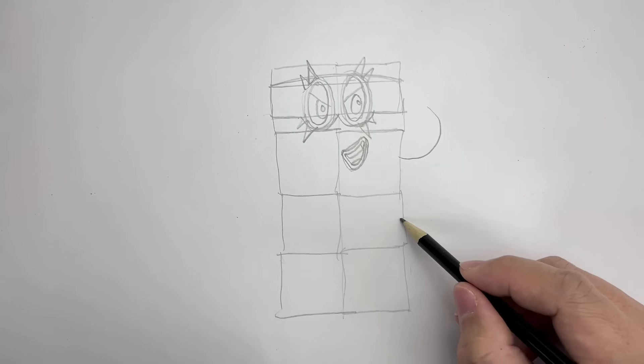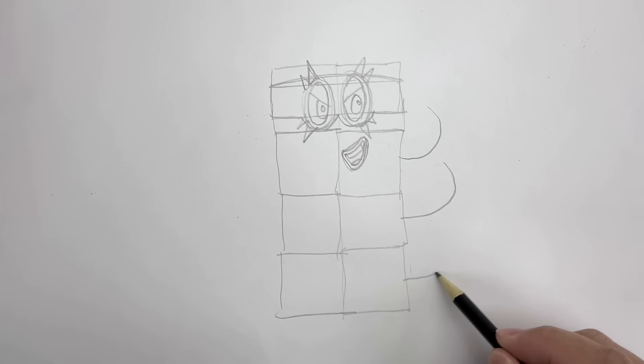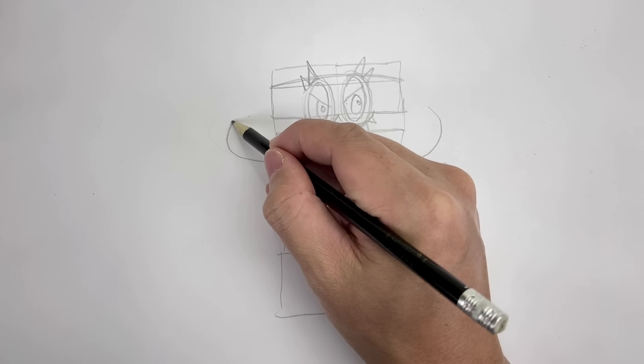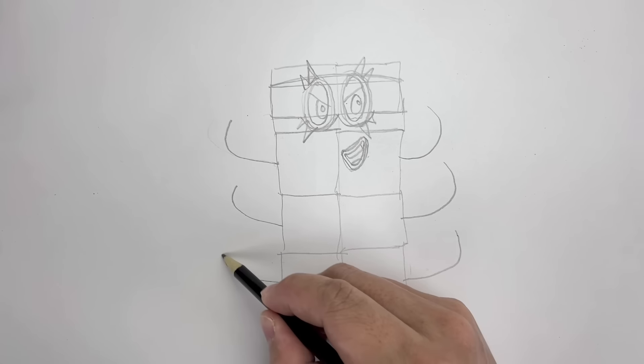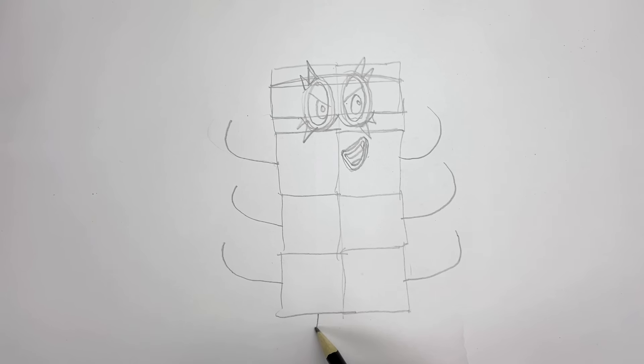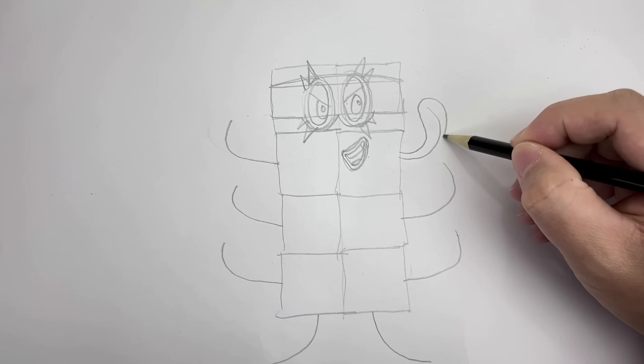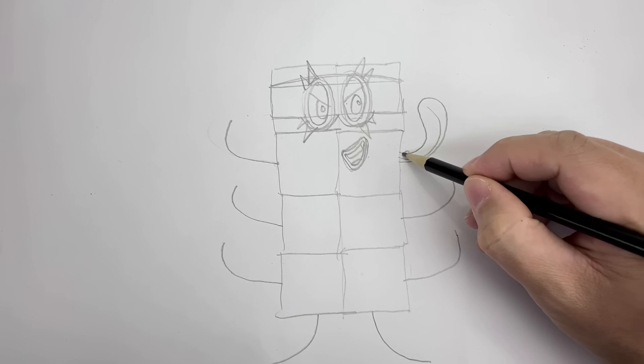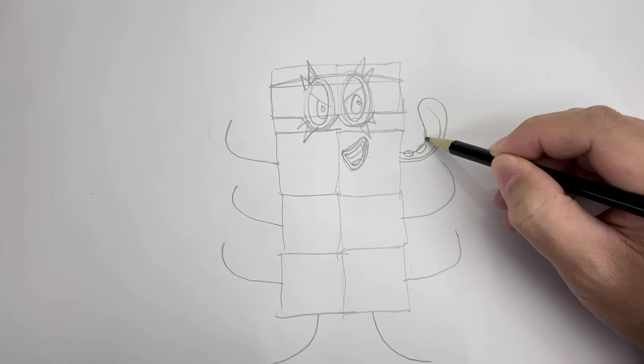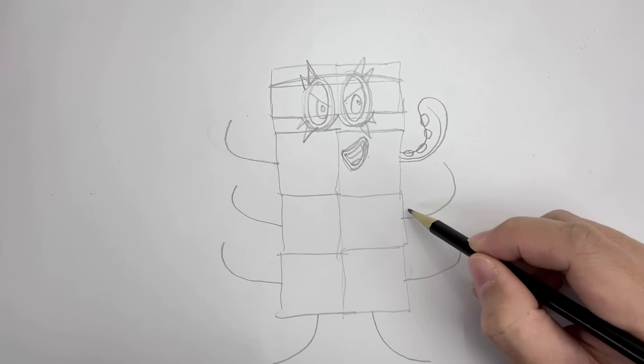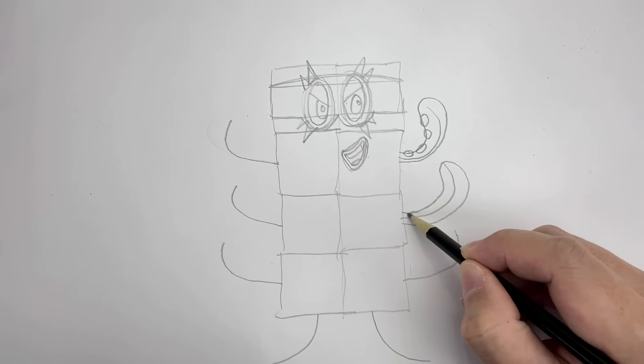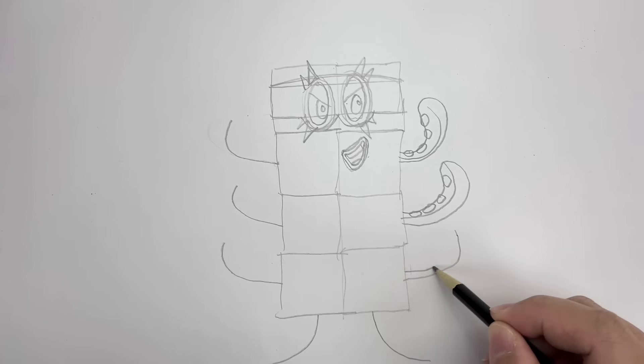Then draw six curved lines, three on each side, coming out from the middle of each row. These will be his arms. Add two curved lines at the bottom for his legs. Then you can draw out his arms. Make sure to make the ends a little bit wider. Add little circles on each arm for his suction cups. Then do the same for all his other arms.